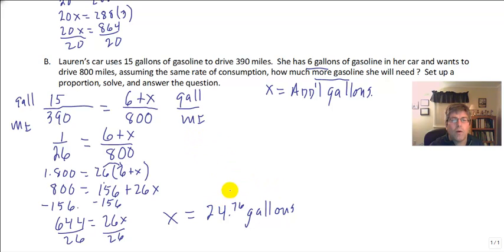So she'll need 24.76 additional gallons to cover 800 miles. So to cover 800, she'll need about 30.76 gallons of gas total. So there's a couple of word problems solved using proportion. And we will see you in class.